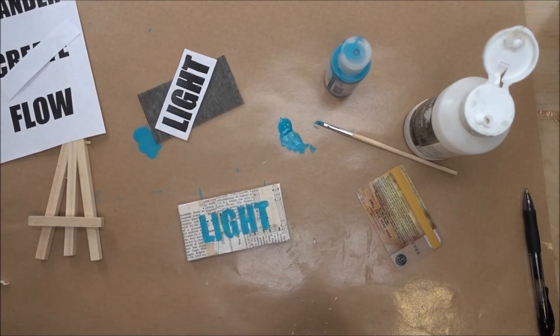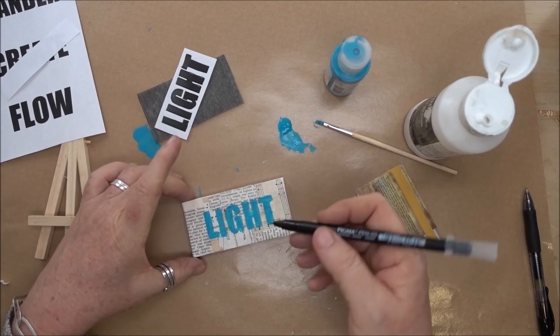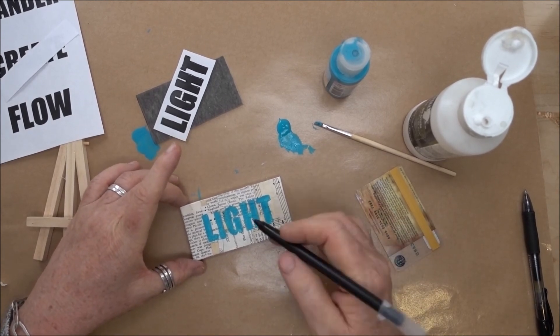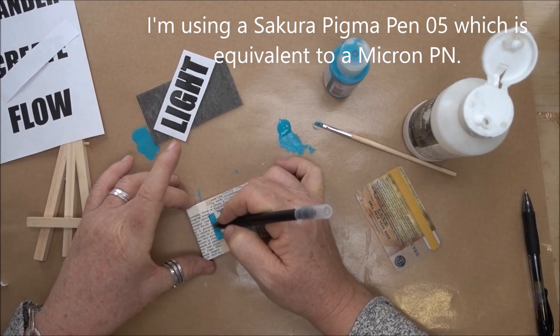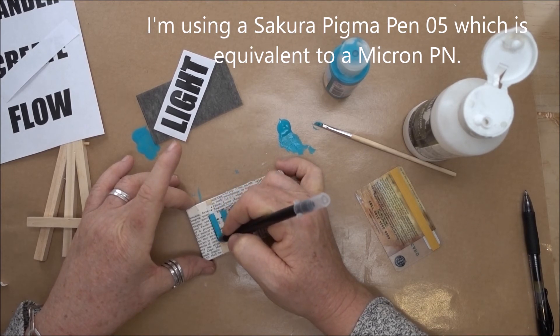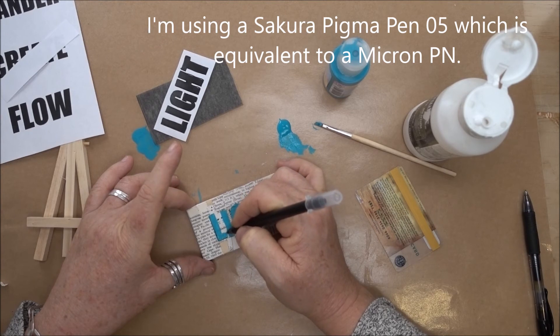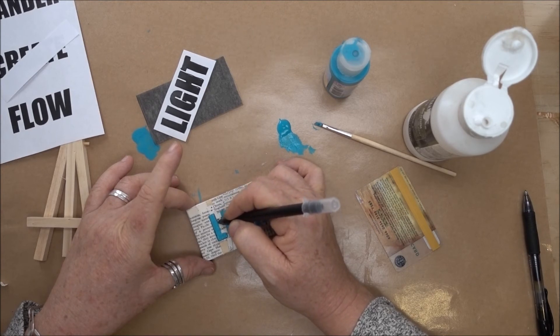I'm going to finish this off by adding some black line around it. You can use any fine tip black pen or even a pencil. We just want to add a little more definition around these letters so that they pop off the page or off the canvas.